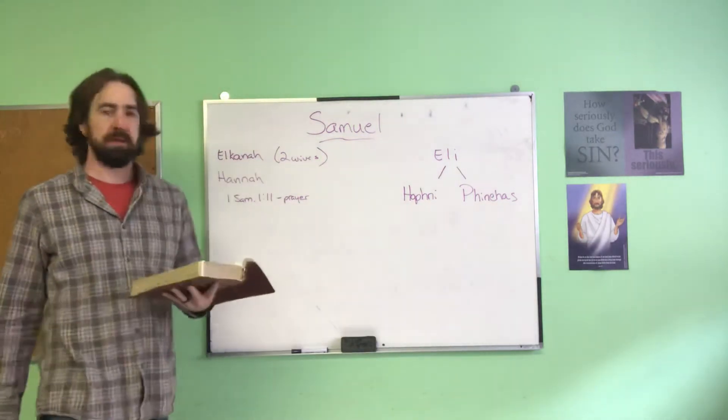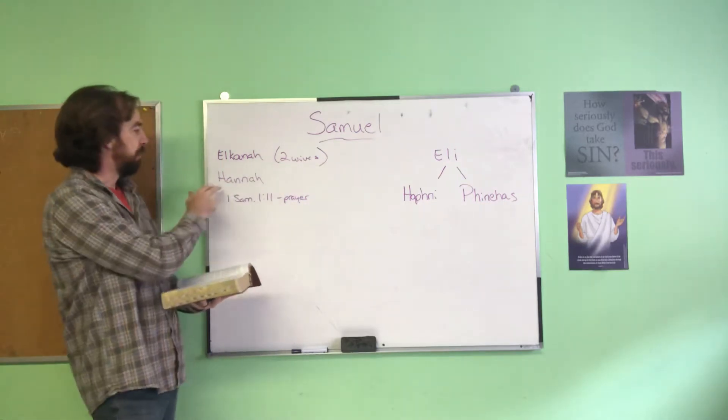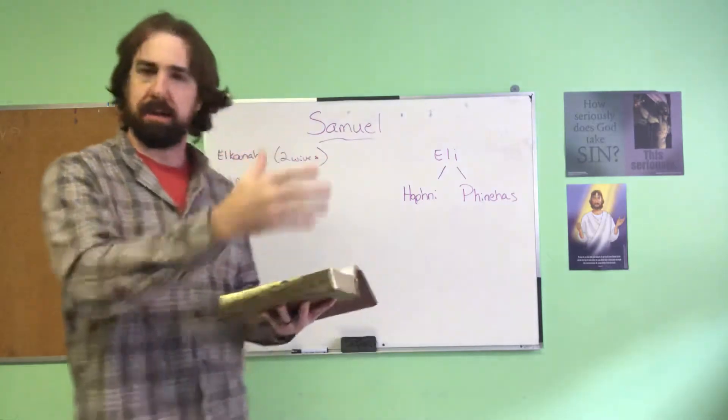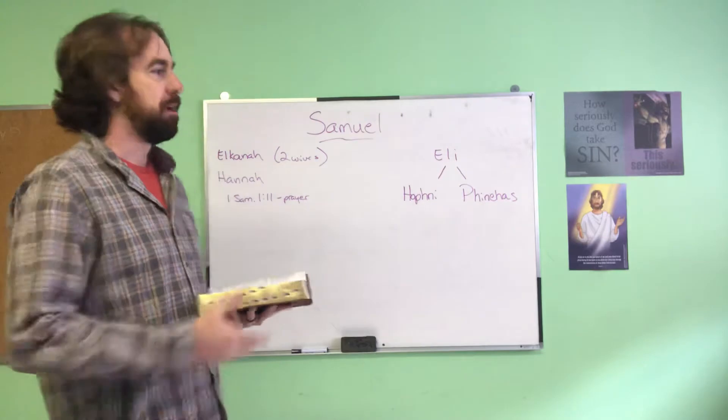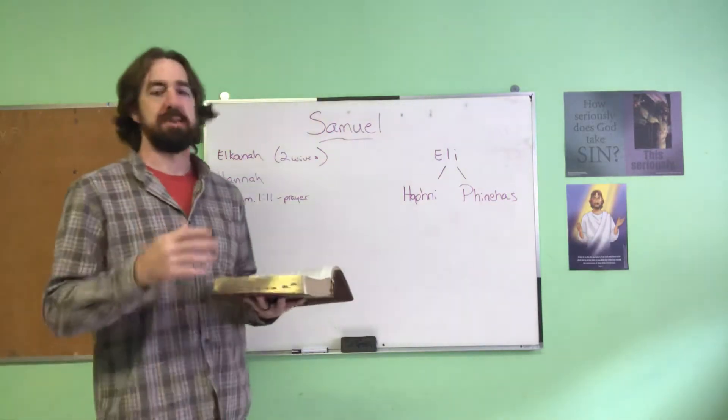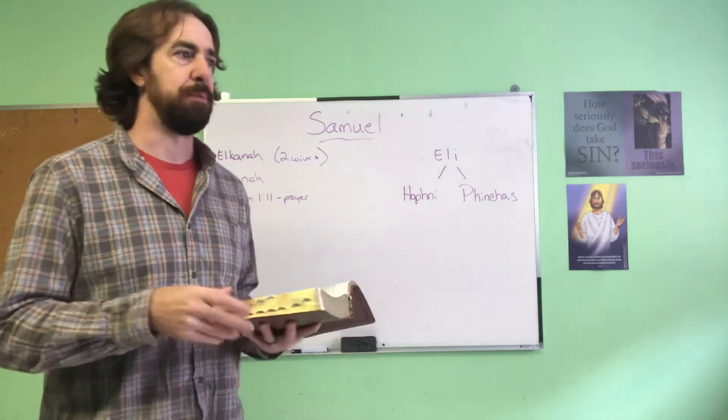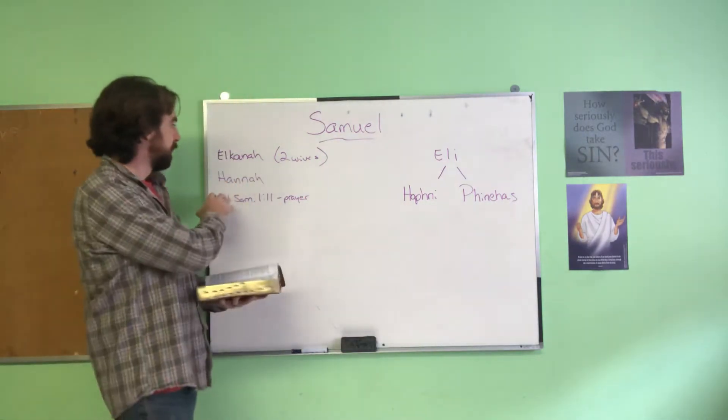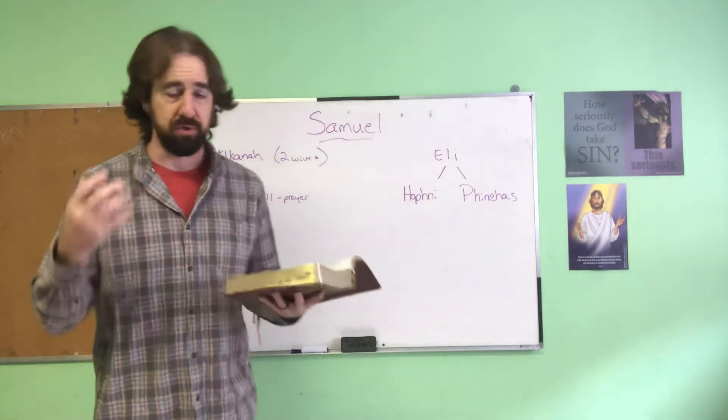We have this man Elkanah, and he has two wives. We're going to talk about Hannah. His other wife has given him several children, but Hannah was barren - she couldn't have a child. You probably recognize this theme from other stories in the Bible because it's a pretty powerful message. We have this woman who, through her life, even though she's been married and trying, just could not have a child.